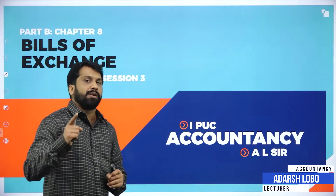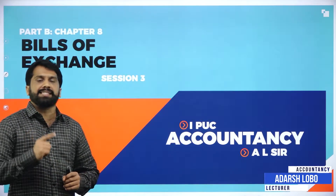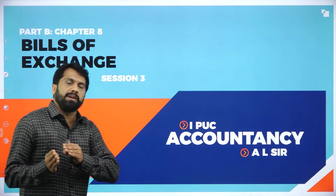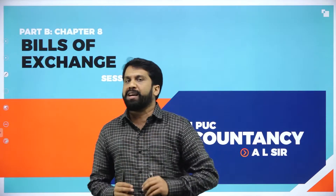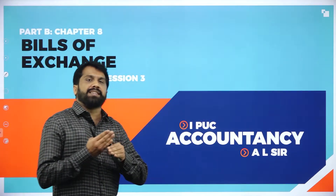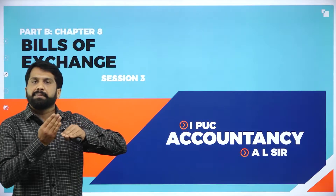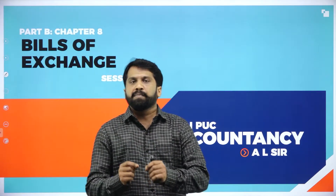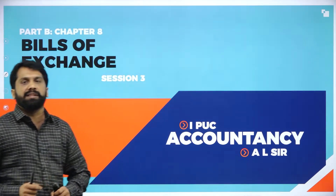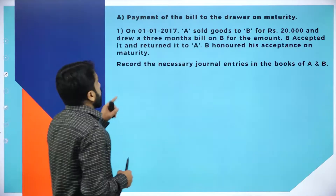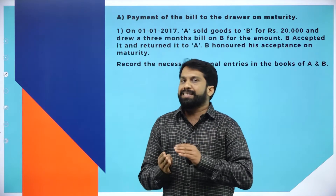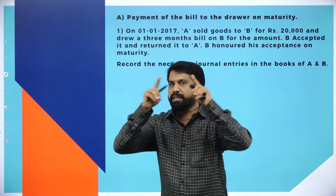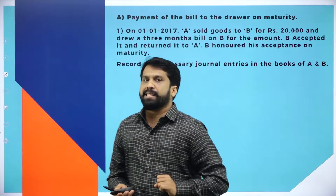There is a 12-mark question in your examination. We will not do the complete 12-mark question now; we will do one part of it, so that we can understand this concept bit by bit. I have made two parts — first we will learn the first part, later we will go for the second part. The first problem on Bills of Exchange: remember the diagram — one is buyer, another one is seller.